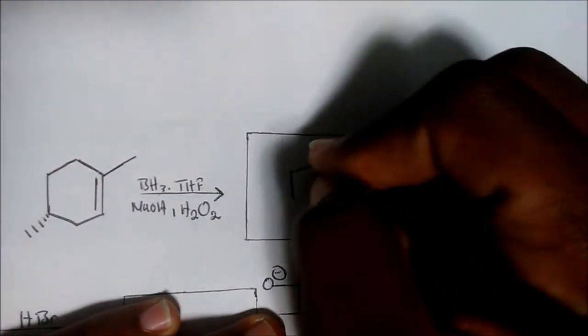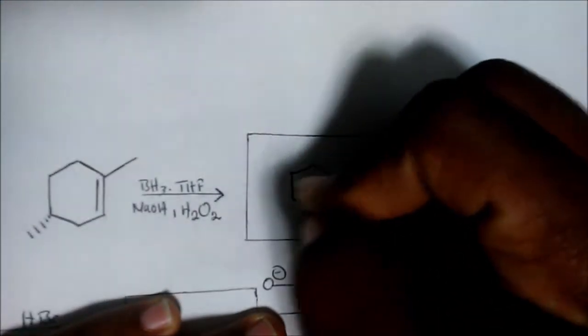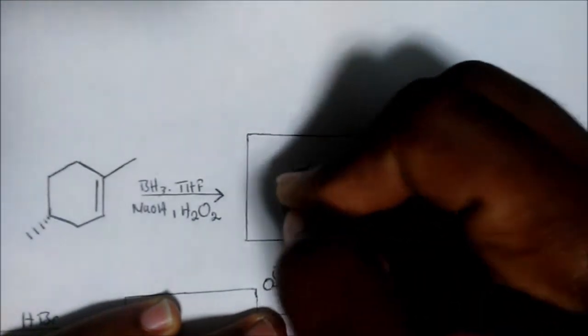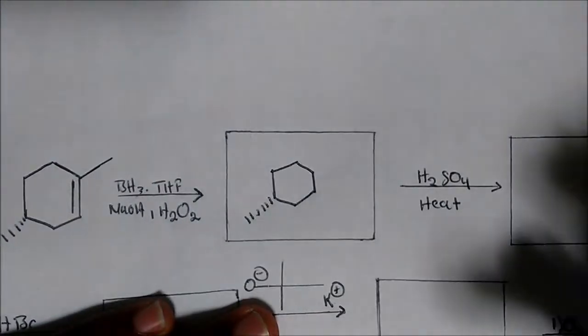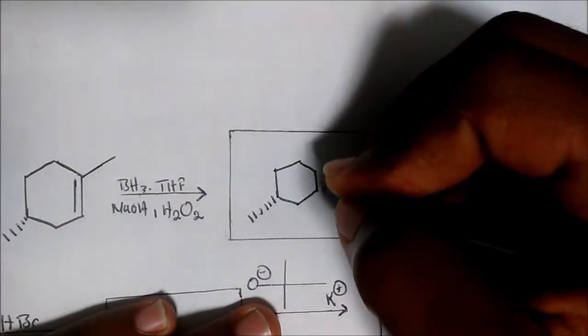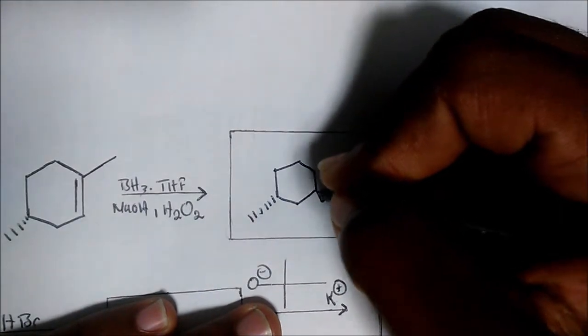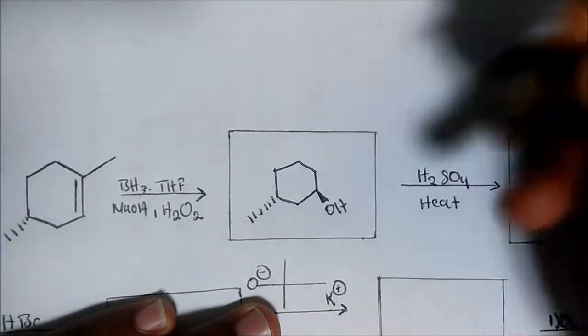So the product of that reaction, methyl still stays going away from us. But our OH is going to be on the least substituted part of the group with them both being syn. So we're going to get something that looks like this.